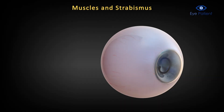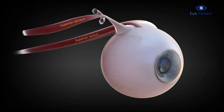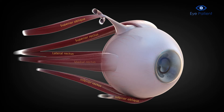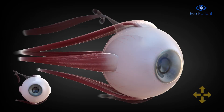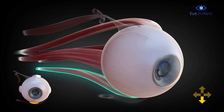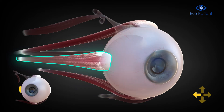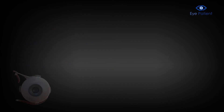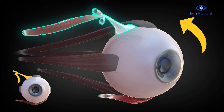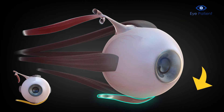Muscles and strabismus. There are six muscles surrounding each eye which coordinate to align the eyes and focus vision into one image. Four of these muscles move the eye up, down, right, and left. The other two muscles move the eyes at certain angles.